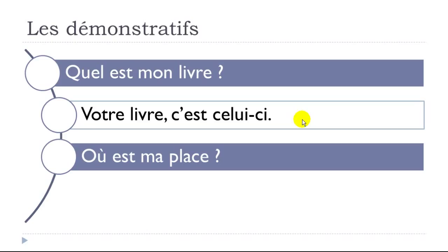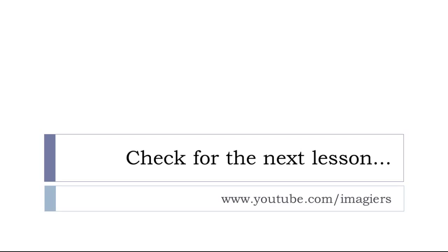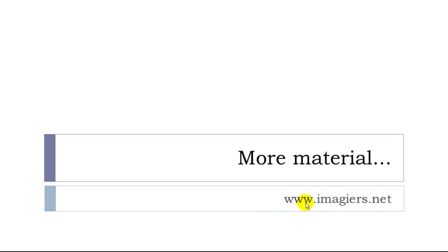'Où est ma place?' — where is my seat? — 'C'est celle-là.' You tend to point at it at the same time. Remember, we have the difference between masculine and feminine, singular and plural, and then the difference between -ci (nearest) and -là (further). Let's see and practice. You can go to the next lesson on the website imagier.net.